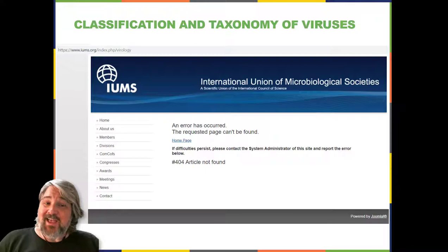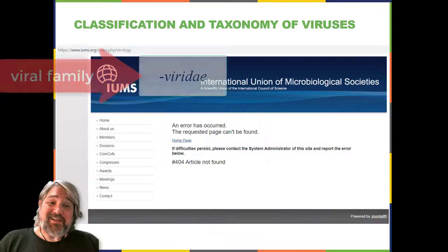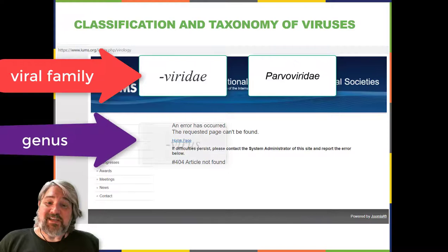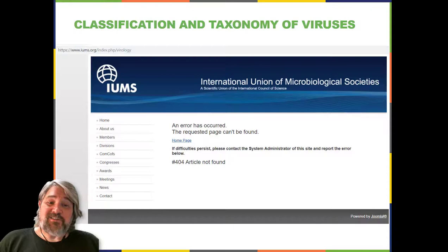To date, the ICTV has classified known viruses in seven orders, 96 families, and 350 genera. Viral families end in -viridae, like Parvoviridae, and genus names end in -virus, like Parvovirus. The names of viral orders, families, and genera are all italicized. When referring to a viral species, we often use a genus and species epithet such as Pandoravirus dulcis or Pandoravirus salinus.